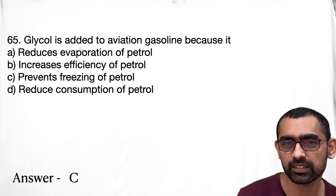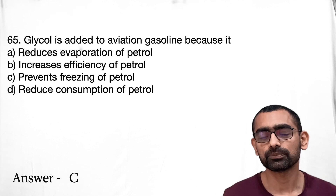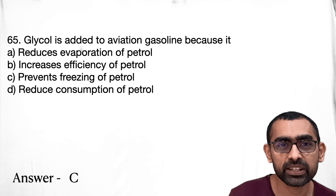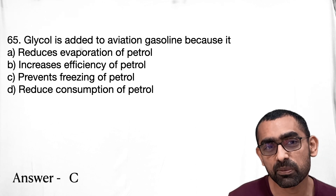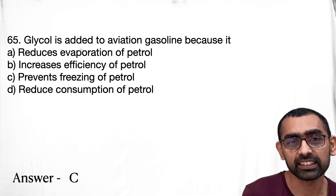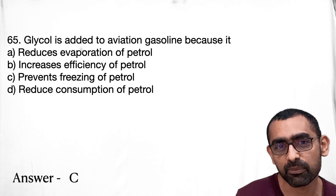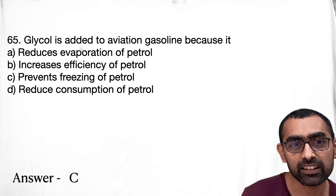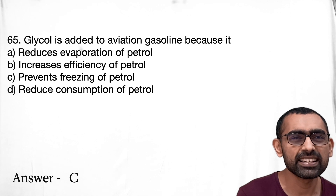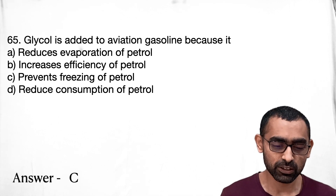Question 65 is a direct general science question: why is glycol added to aviation fuel? Such questions are fairly common — you should know why certain substances are added to various fuels. In this case, glycol is added to prevent freezing of the fuel. You should also know why sulfur is added to rubber during vulcanization, and why an odorant is added to LPG so that a gas leak from a cylinder is easily detectable. These are everyday things we encounter but often don't think about the reason behind.